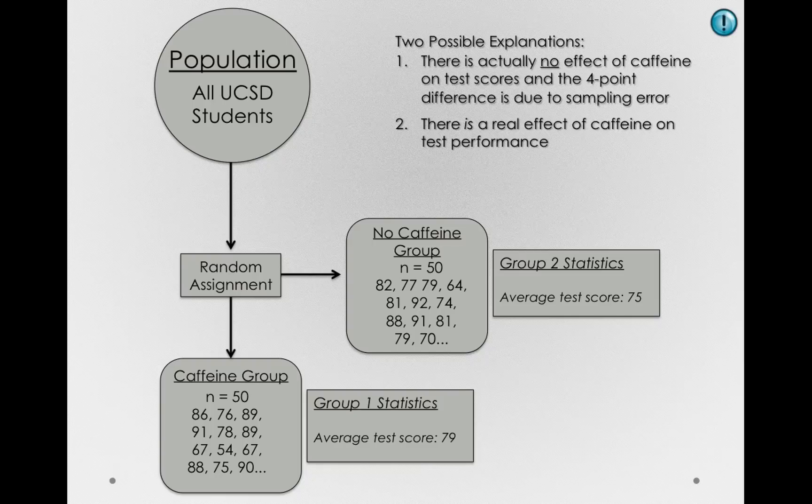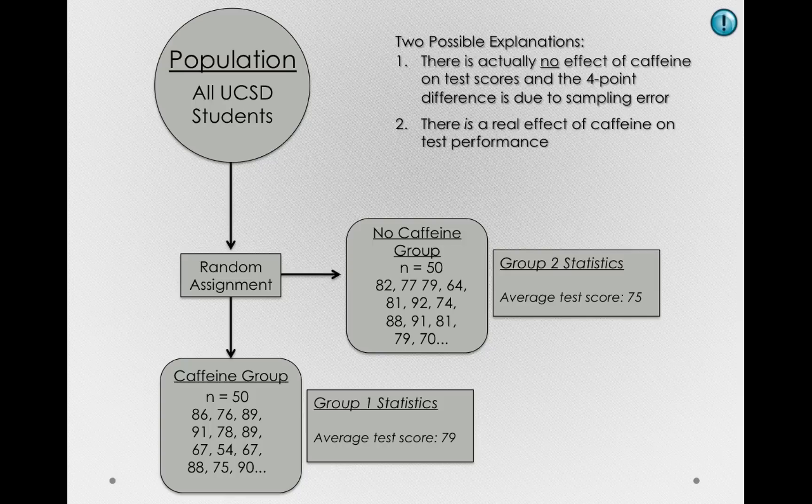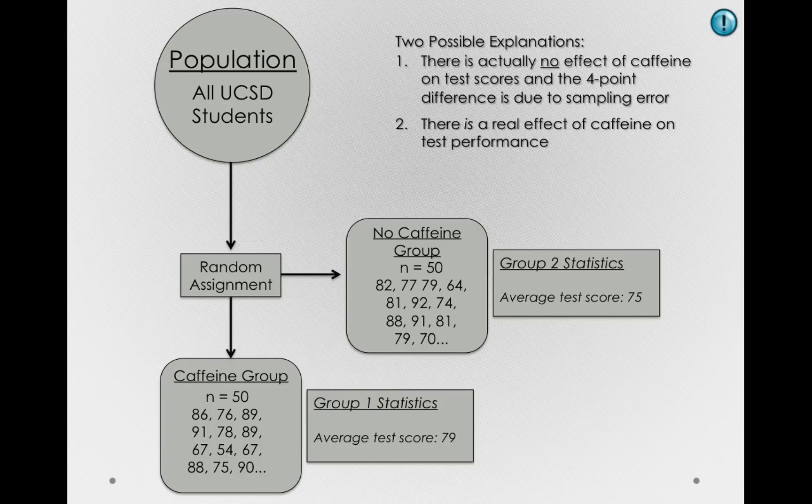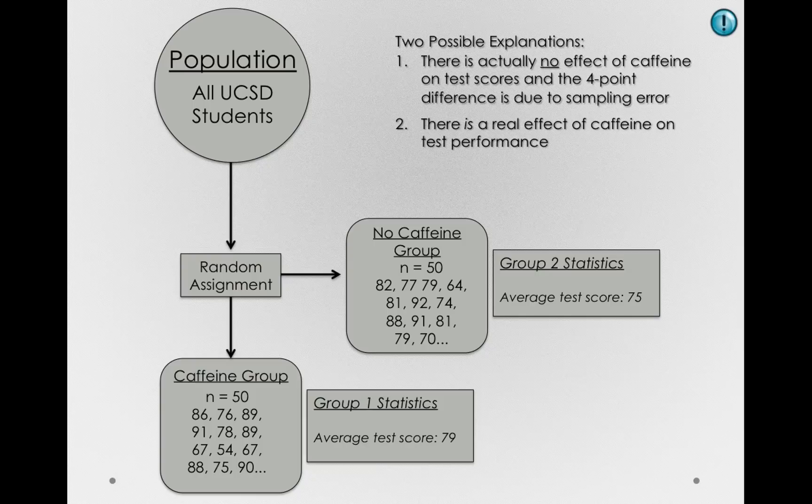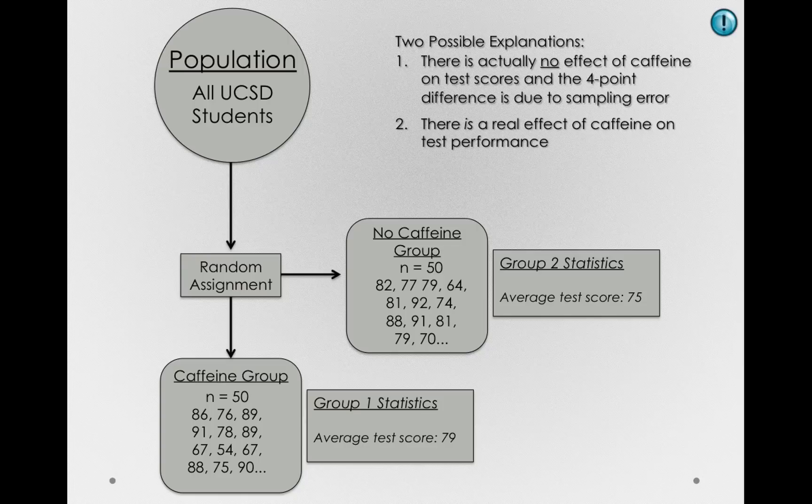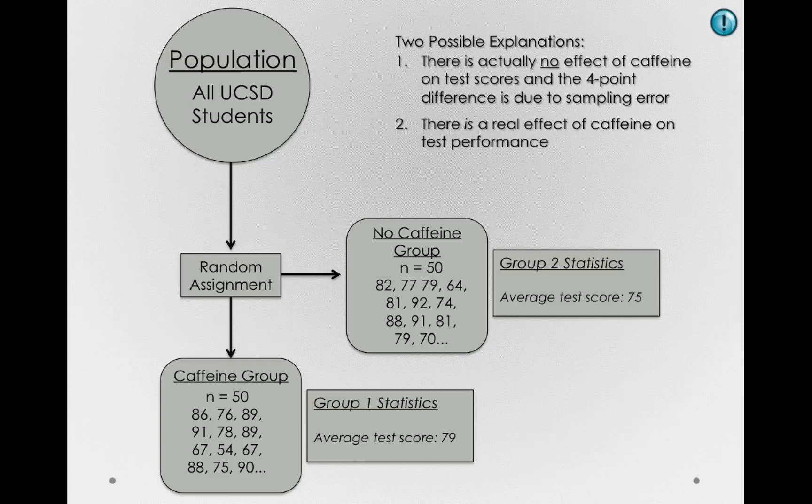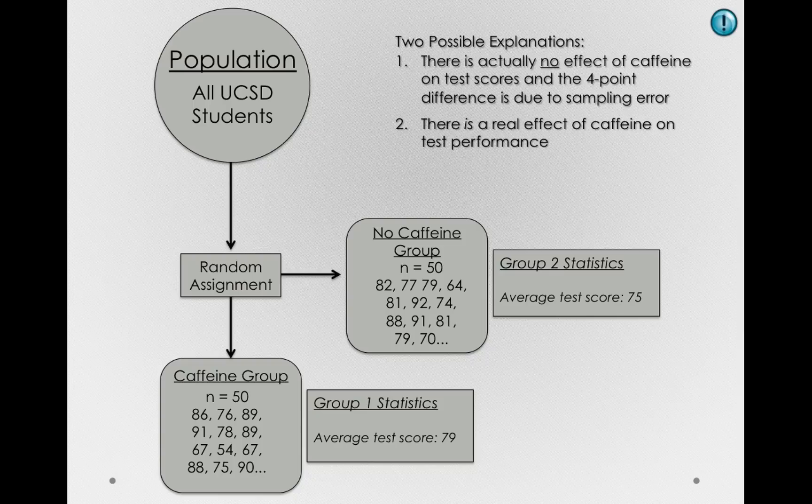One that we can only reject if we can show in some way that a four-point difference would be unlikely to be due to sampling error. Now, let me restate this point because this is critical. If we can show that sampling error wouldn't reasonably cause a four-point difference in these two groups, then we will have some means to reject that first possible explanation. And if we can show that sampling error alone is not the reason that the difference exists between the groups, we'll have some reason to multiply entities, to add an explanatory unit, to actually say that there is some real effect we've measured in addition to the ever-present sampling error of the world.